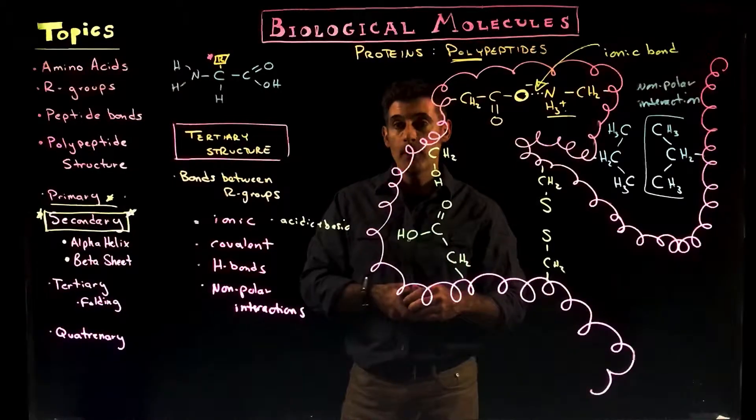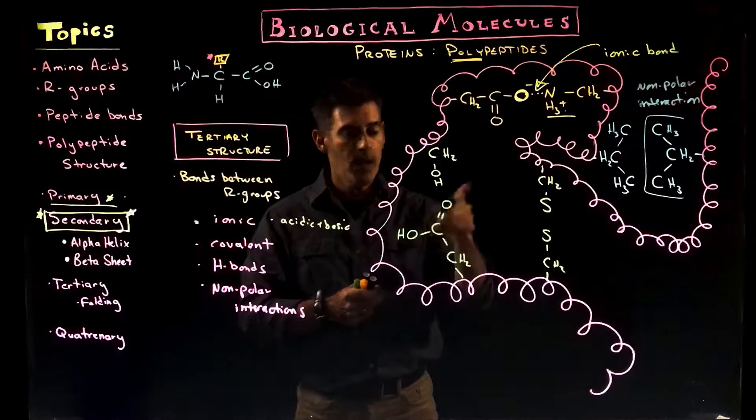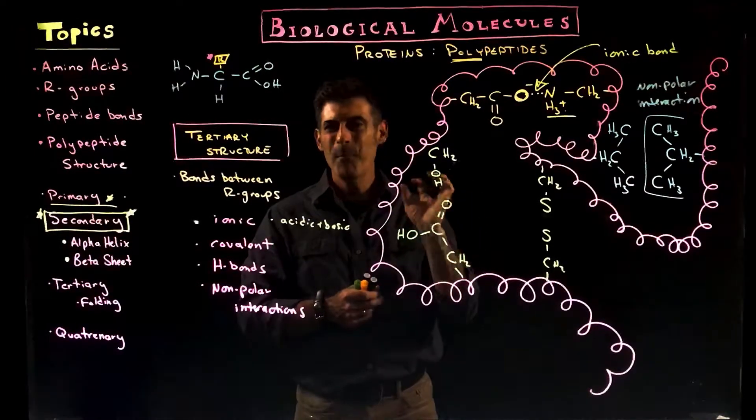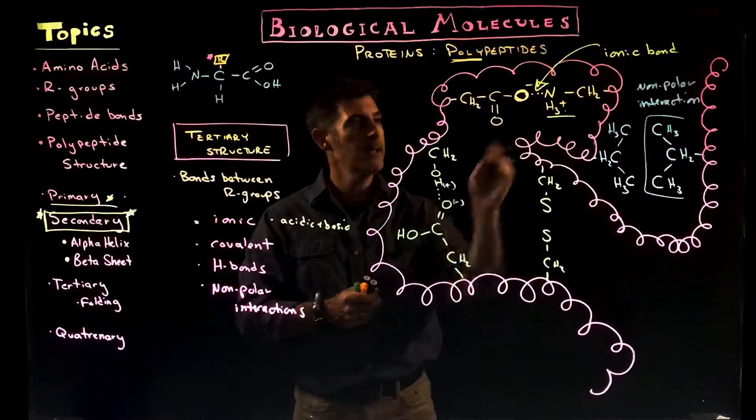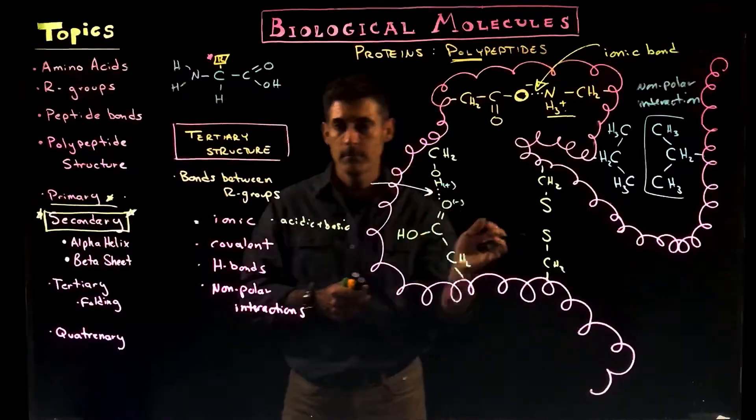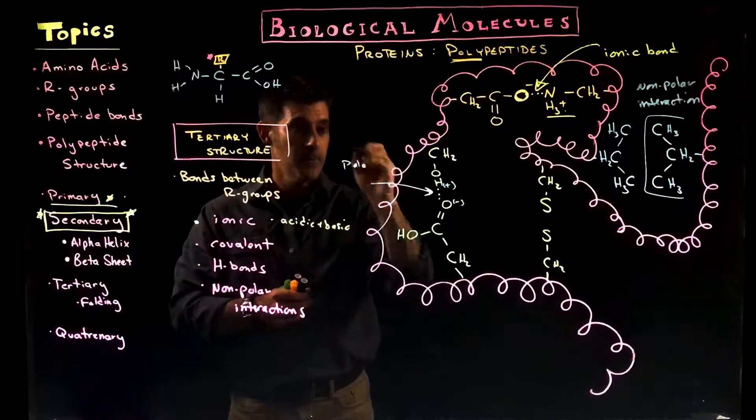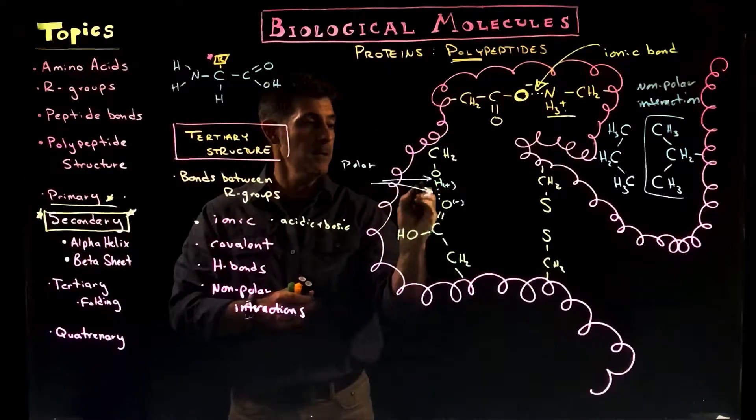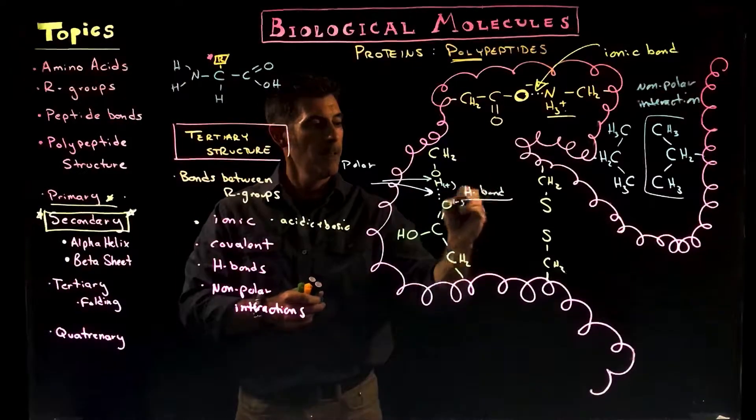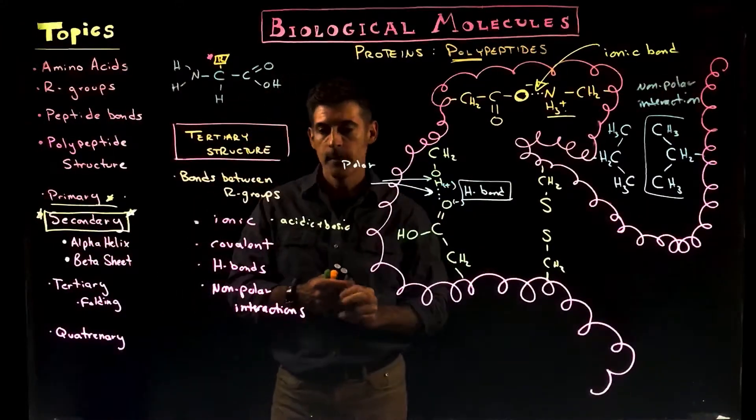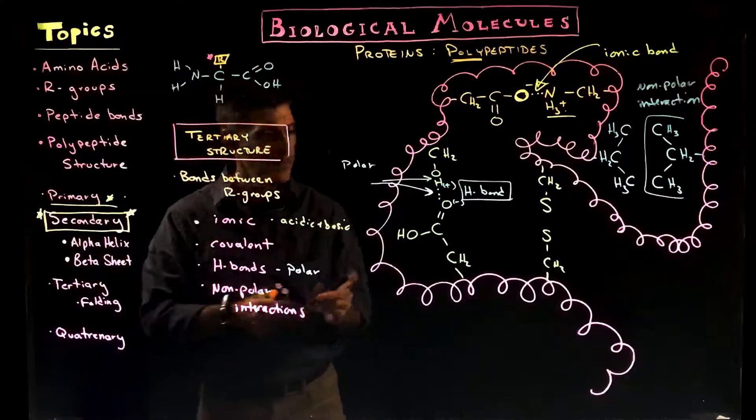And then we have a whole number of R groups that are polar. So we have R groups that have carbons and oxygens and oxygens and hydrogens. And they're going to have partial negative and partial positive charge. Just like the ionic bond, they're going to be attracted to each other. They're not fully ionized, but that's what we call the polar. These are polar covalent bonds. And then this bond here that we're making is the hydrogen bond. So because these are polar R groups, these are the hydrogen bonds between the polar R groups.